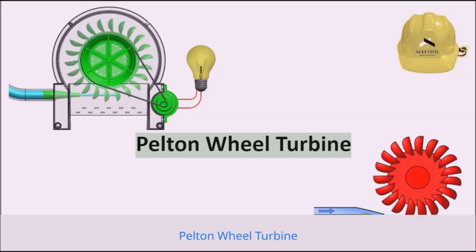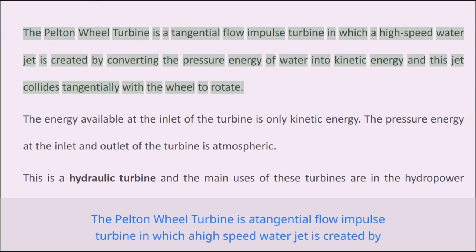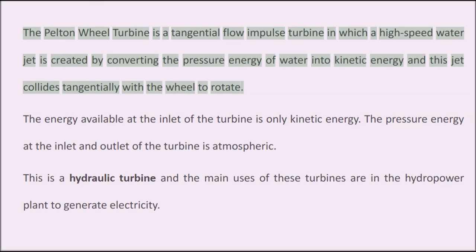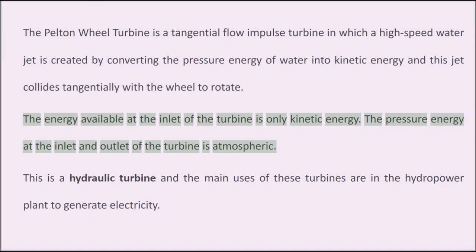The Pelton wheel turbine is a tangential flow impulse turbine in which a high-speed water jet is created by converting the pressure energy of water into kinetic energy, and this jet collides tangentially with the wheel to rotate it. The energy available at the inlet of the turbine is only kinetic energy. The pressure energy at the inlet and outlet of the turbine is atmospheric.